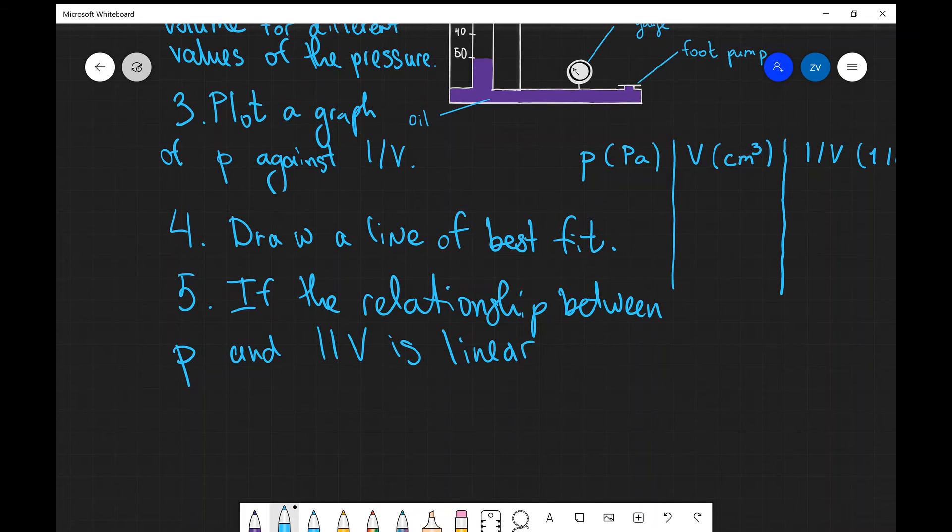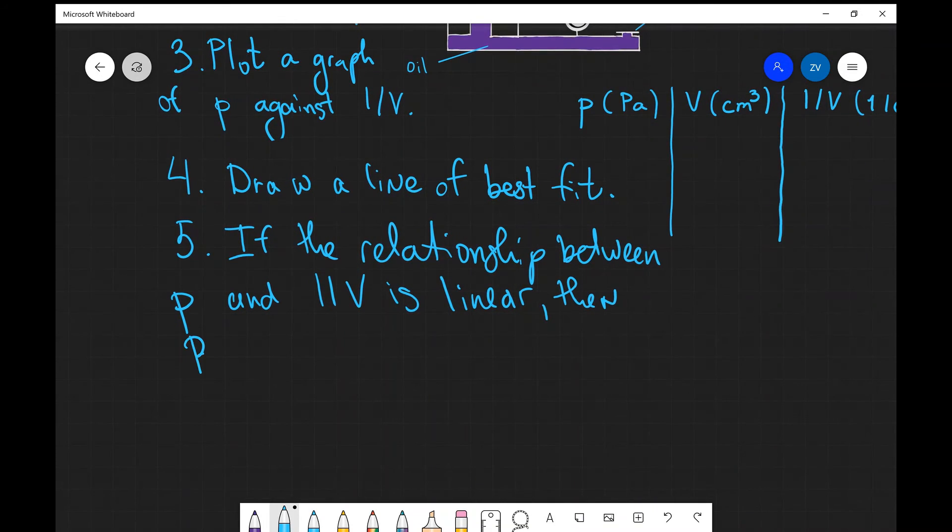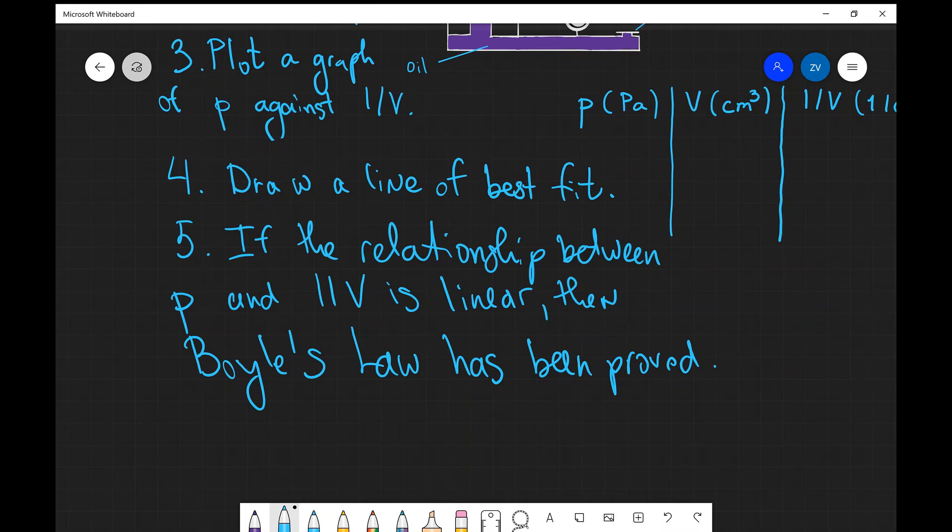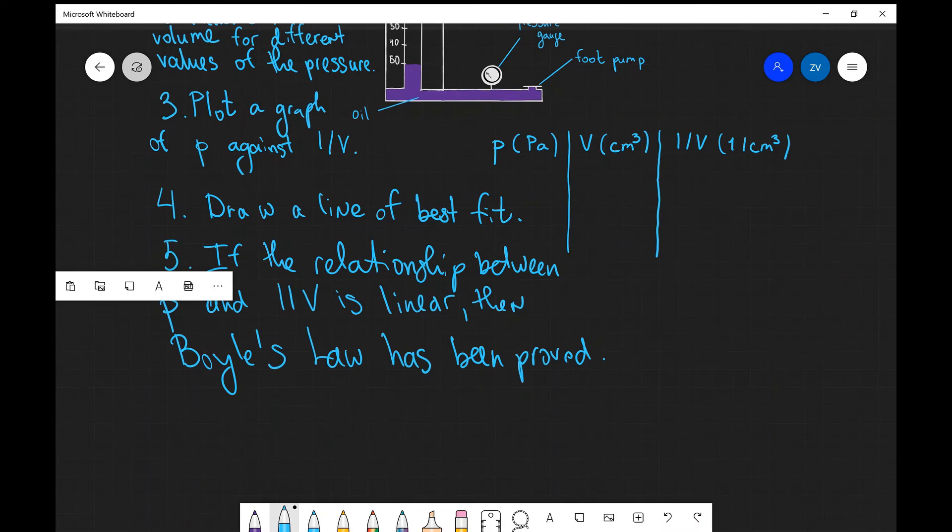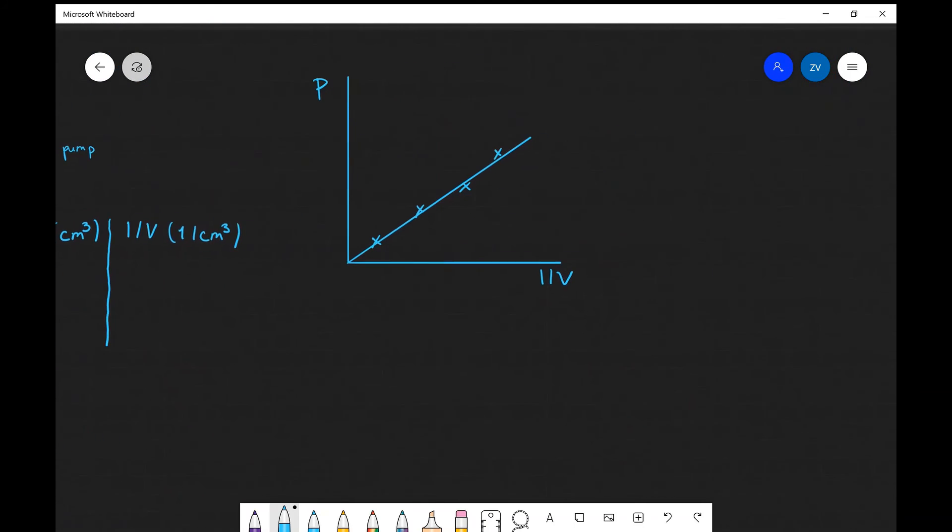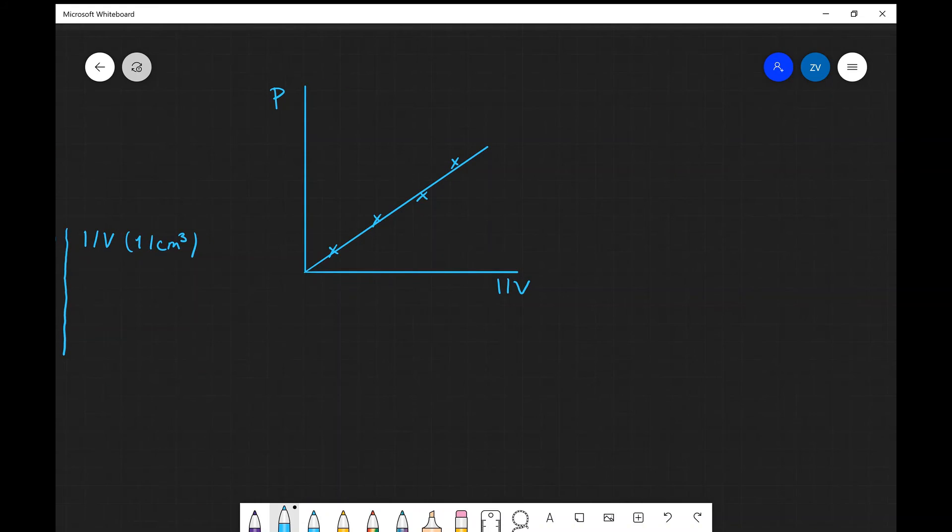in other words, pressure is inversely proportional to the volume, and this is quite important. In practice, that means our final graph would probably look something like this. We have pressure on the y-axis and 1/V on the x-axis. We have some data points, we draw the line of best fit,